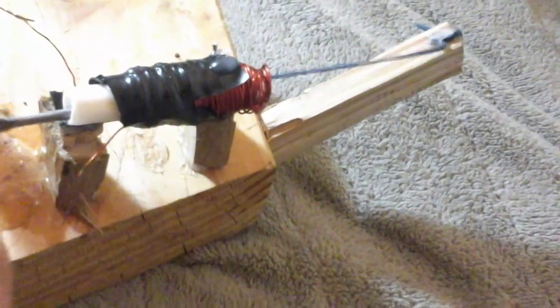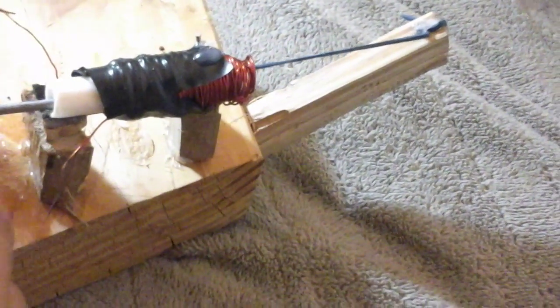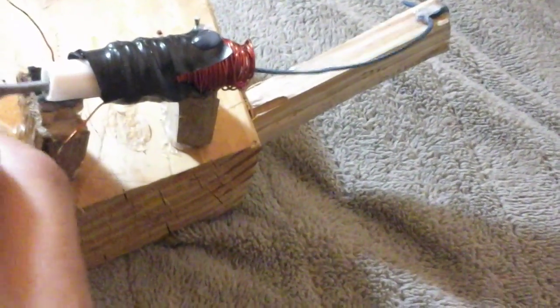This is just a little rubber band to keep the solenoid from flying out on the outstroke.